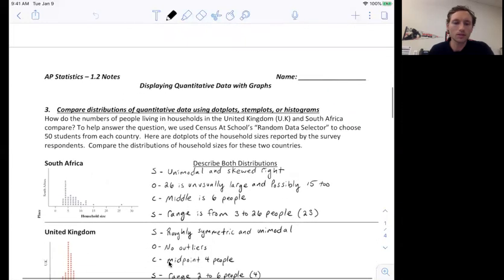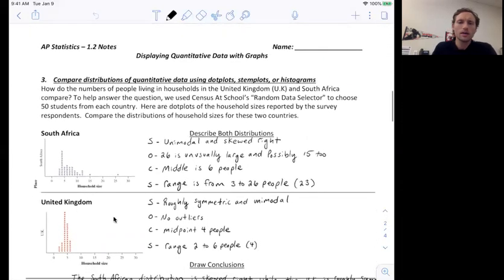that are showing the household sizes from 50 random families in South Africa and 50 randomly selected families in the United Kingdom. So they want us to compare the household sizes from these distributions. So the first thing we need to do is describe SOCS for each distribution.